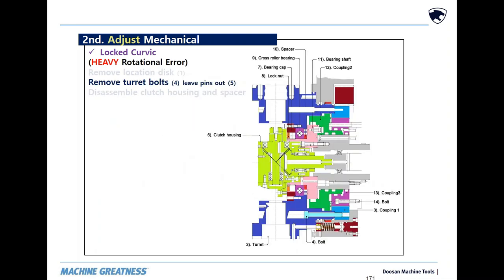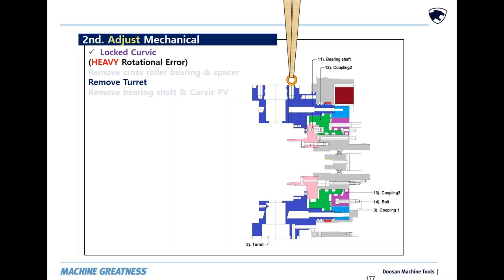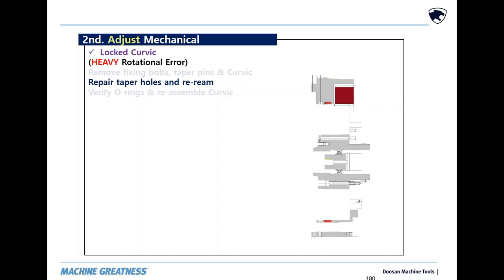Here's where we pick up if the light rotation correction was out of tolerance. Remove the turret bolts. Take off the coolant plug. Remove the live tool drive and spacer. The mounting bolts for this style are accessed from the front. Loosen the bearing cap and lock nut. Attach a hoist. Remove the cross roller bearing and spacer. Remove the turret. Remove the bearing shaft and curvic piston. Remove the fixing bolts, the taper pins, and the two remaining curvic pieces. Using the remaining undamaged bolts or precise manual alignment, repair and re-ream the taper holes.